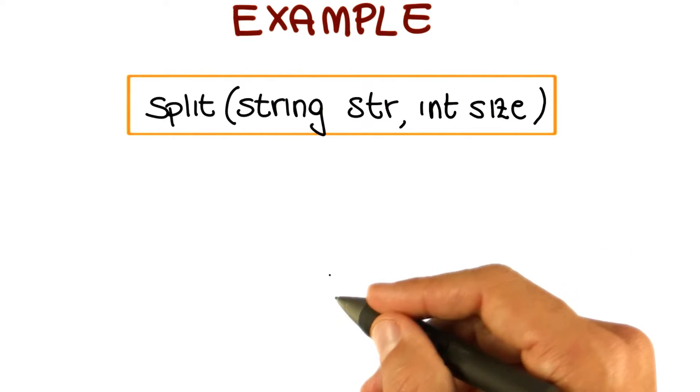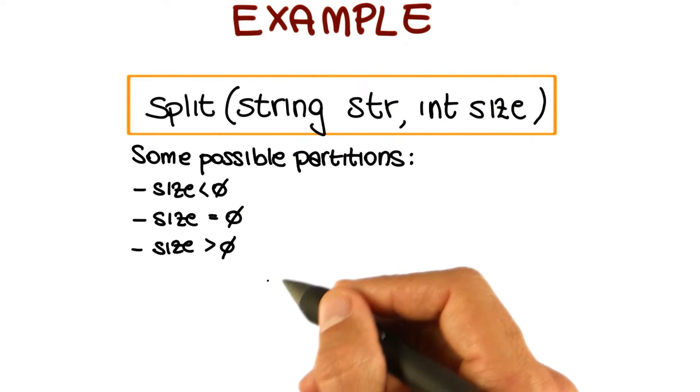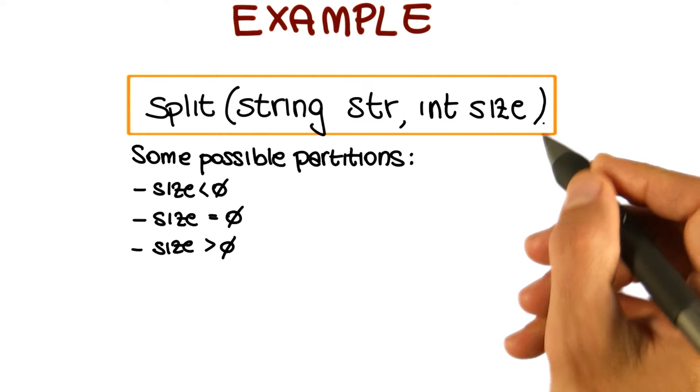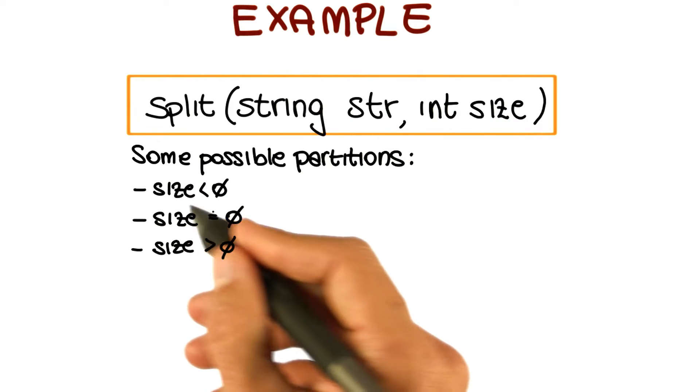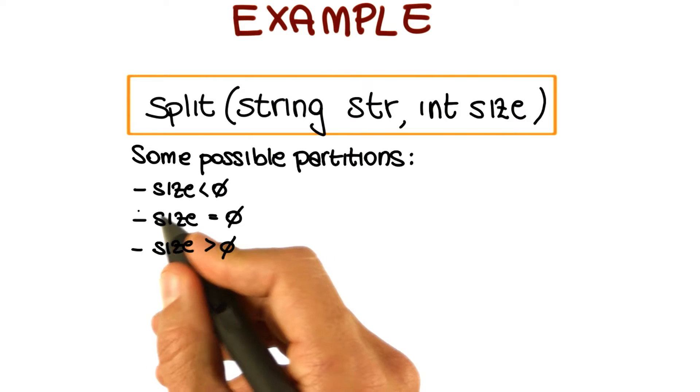So how do we identify some possible partitions for this program? If we consider the input size, we can identify three natural partitions, which are size less than zero. For example, we want to test how the program behaves if we pass an incorrect size.